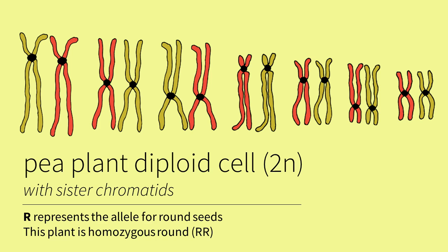We now know that a pea plant has 14 chromosomes, which means it has 7 homologous pairs. Recall that when chromosomes are present in pairs, the cell is called diploid. So here we have a diploid set of chromosomes, which are replicated.